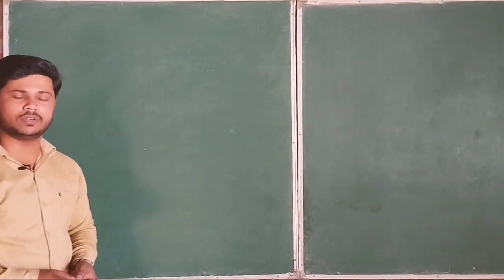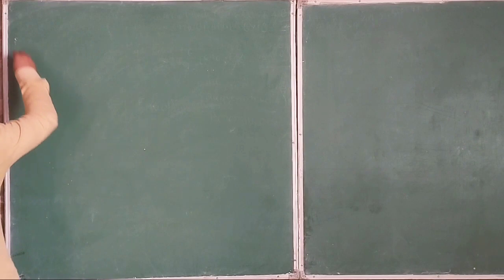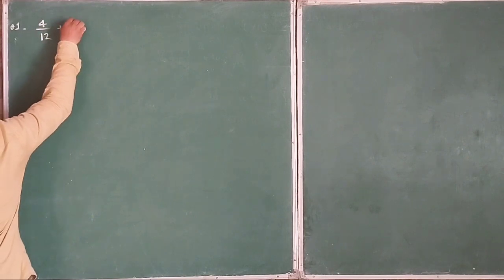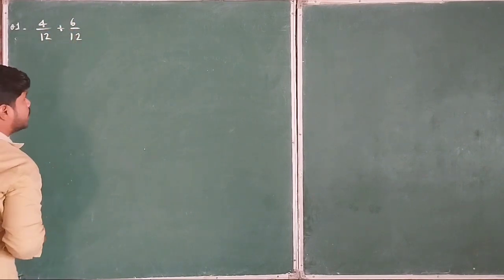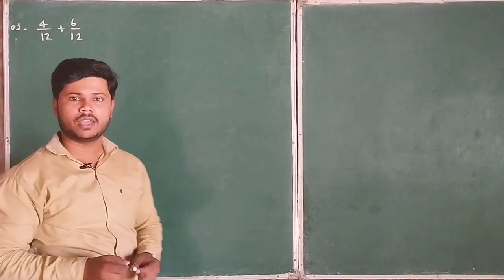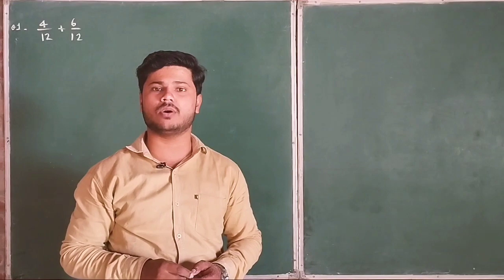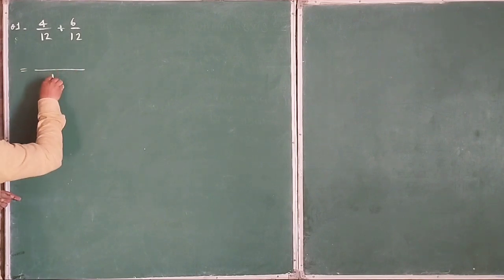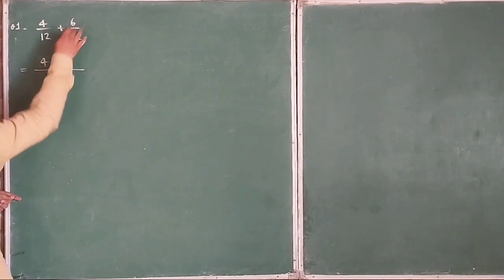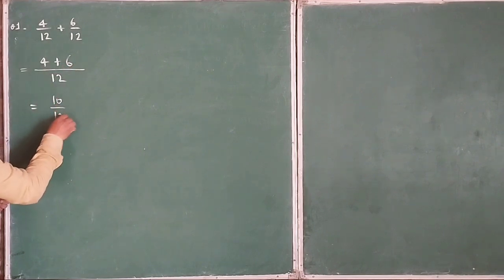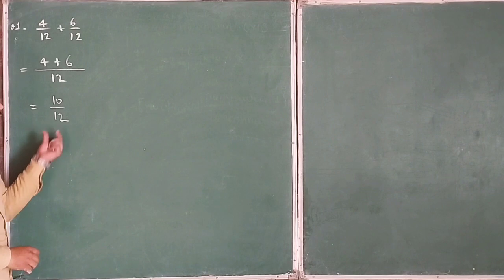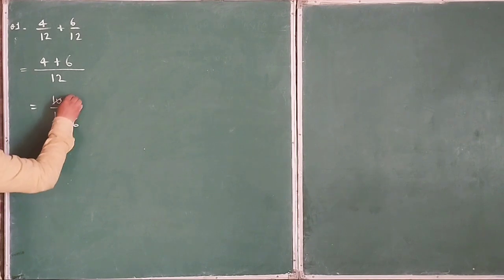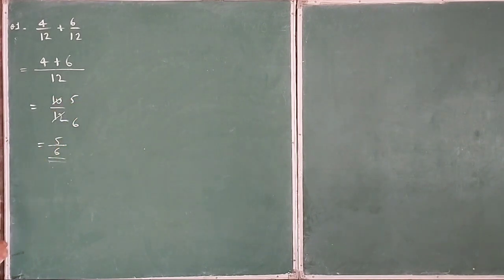Now we solve another example. Question number 1: 4/12 plus 6/12. Here the denominator is the same, so we add only the numerators: 4 plus 6 equals 10, giving 10/12. We can simplify this — dividing by 2 gives 5/6. So the simplest form is 5/6.